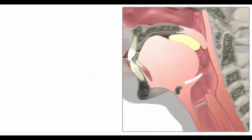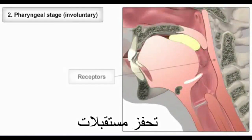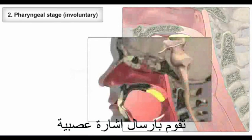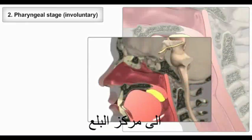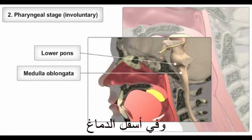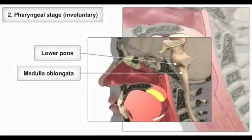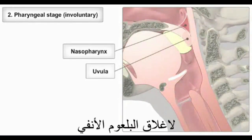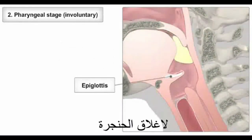Movement of the bolus stimulates receptors in the oropharynx, which send impulses to the deglutition center in the medulla oblongata and the lower pons of the brainstem. The brain signals the soft palate and uvula to close off the nasopharynx, and the epiglottis to seal off the larynx.